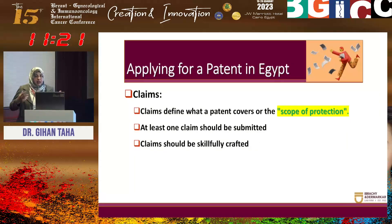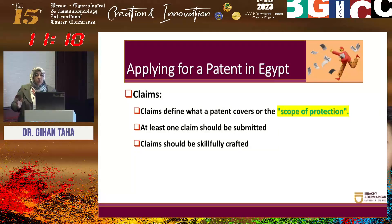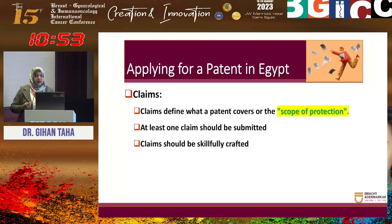Then the cherry on the cake — the claims. The claims are very important. You cannot write a patent without at least one claim. Claims define what we call the scope of protection — what you want to protect with this patent — and they should be very cleverly written. It takes years for patent agents and patent attorneys to be able to write a viable, correct, and good claim that gives you the correct scope of protection.